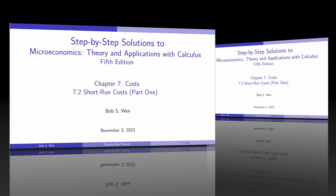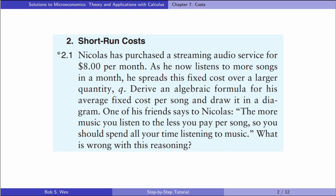Let's look at exercise 2.1. Nicholas has purchased a streaming audio service for eight dollars per month. As he now listens to more songs in a month, he spreads this fixed cost over a larger quantity, Q. Derive an algebraic formula for his average fixed cost per song and draw it in a diagram.